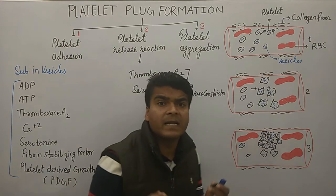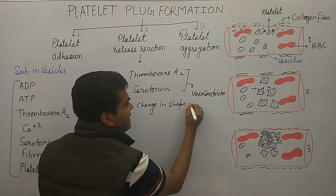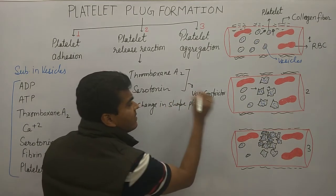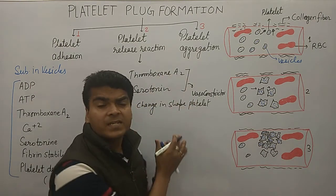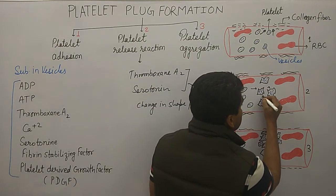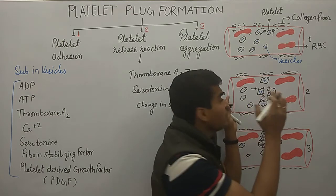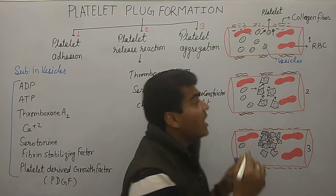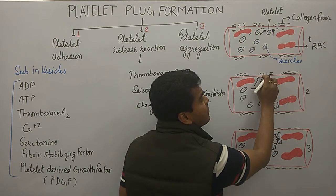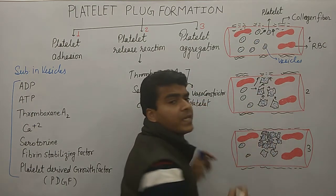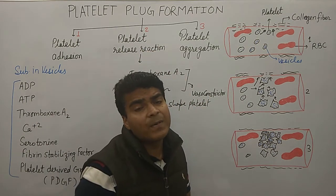Along with vasoconstriction, there is also a change in the shape of the platelet. The platelet shape changes, and this creates constriction at the site. So the second step is platelet release reaction, in which all these substances are released, including calcium, ATP, and ADP.